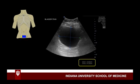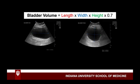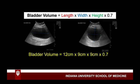Now we are going to obtain our height and width measurements by rotating the probe so that the marker dot is pointed towards the patient's right. We are now in the transverse orientation. Freeze the image when the bladder is the largest, then measure the height and width. Round these measurements to the nearest centimeter. For this patient, the height is 8.63 centimeters, so we round it to 9 centimeters, and the width is 9.33 centimeters, which we round to 9 centimeters. Bladder volume is 12 by 9 by 9 centimeters times the correction factor of 0.7, giving us 680 cc as our total bladder volume. Pretty easy, right?